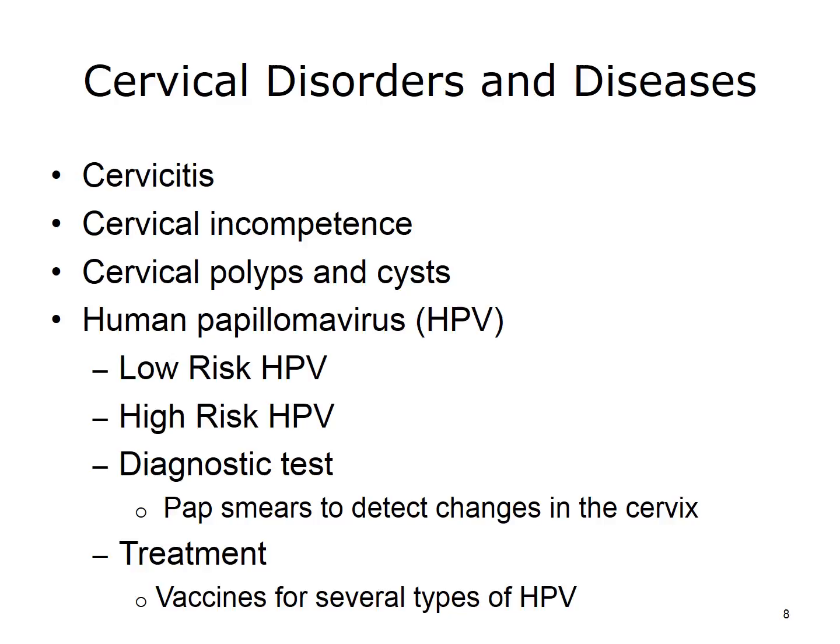High-risk HPV can lead to cancers of the cervix, vulva, vagina, and anus. Pap smears can be used to diagnose changes in the cervix associated with these problems. There is a vaccine which protects against several types of HPV.